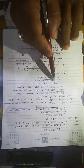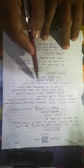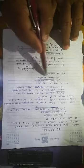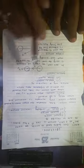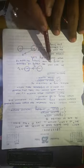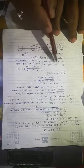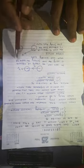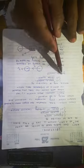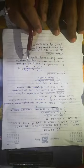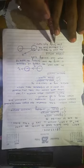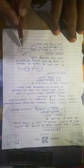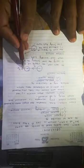Collision may be further classified as head-on collision and oblique collision. In head-on collision, the velocity of approach is along the line joining the centers of the two colliding bodies. In oblique collision, the line of approach is different from the line joining their centers.